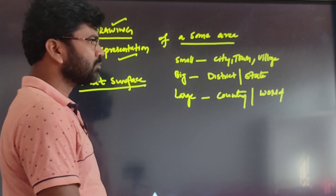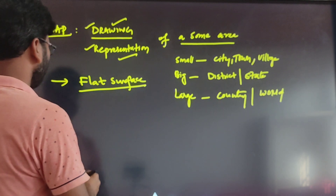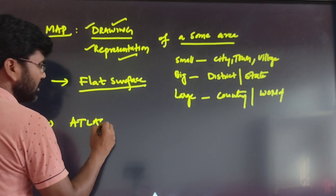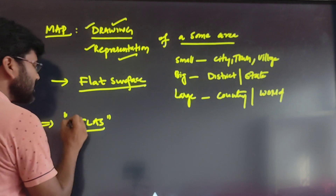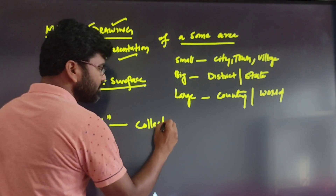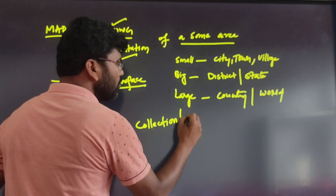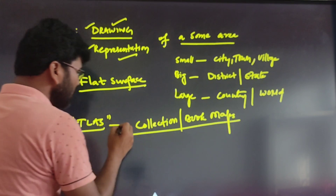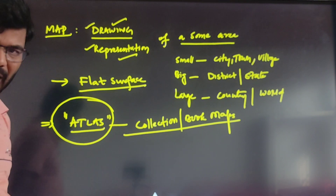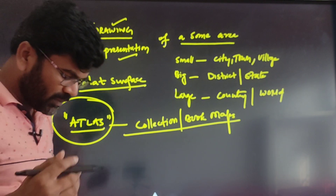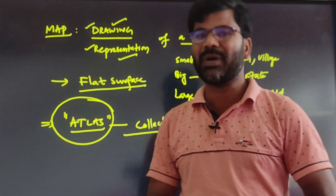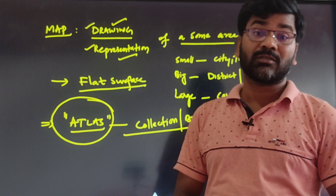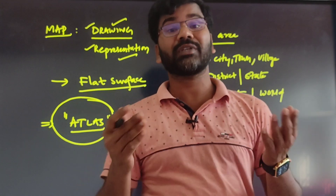The collection of maps is called an atlas. An atlas is a collection of maps, or a book of maps. In an atlas, we have many types of maps.